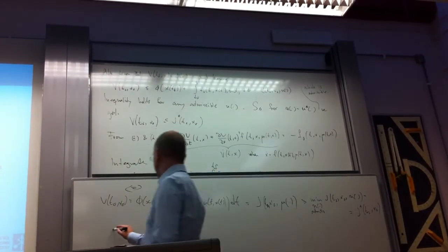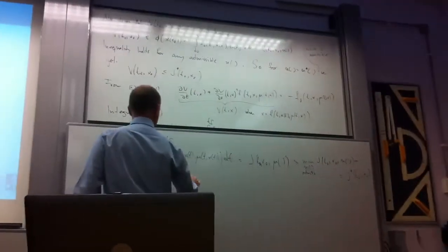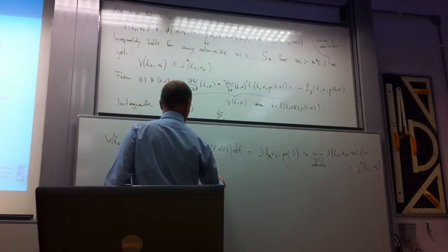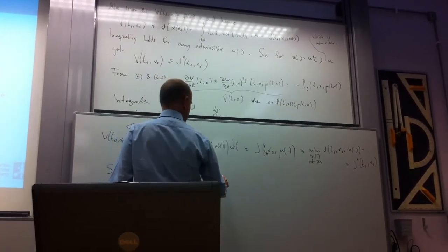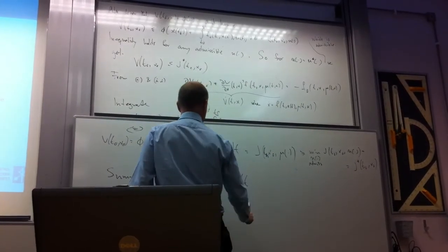So, summing up, j star of t0, x0 is equal to v(t0, x0).